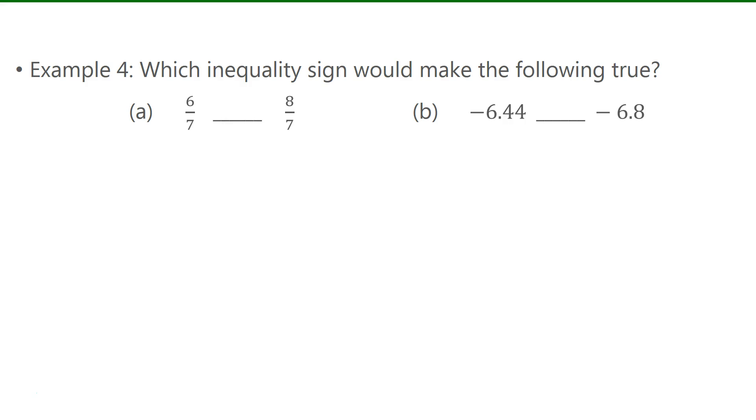Now here we have to put in the correct inequality sign. So we have to put in either a less than sign to make the expression true, or a greater than sign. Now A are fractions, but they already have a common denominator. So that is lucky. We just need to compare the numerators. Since 6 is less than 8, 6 over 7 is less than 8 over 7.